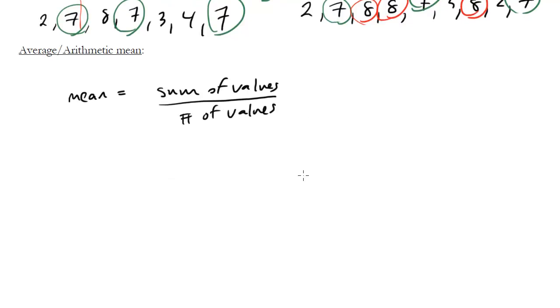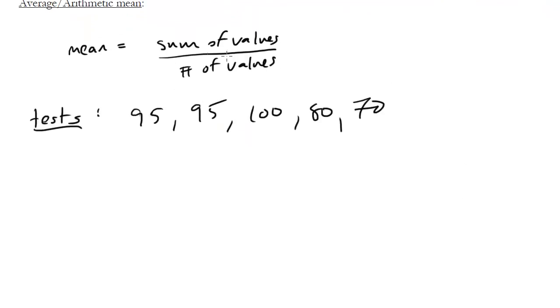So let's just look at some examples. Imagine you're taking some tests in school and you get the following grades: 95, 95, 100, 80, and 70. And you want to know what your average is for the quarter. Well again, just follow the formula. Sum them up. So we add up these five numbers and we get 440.